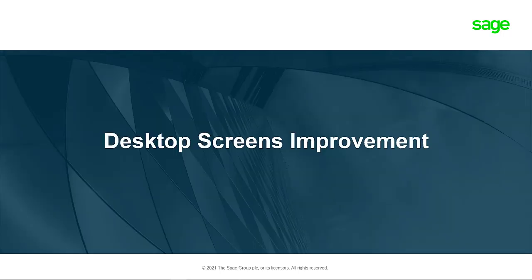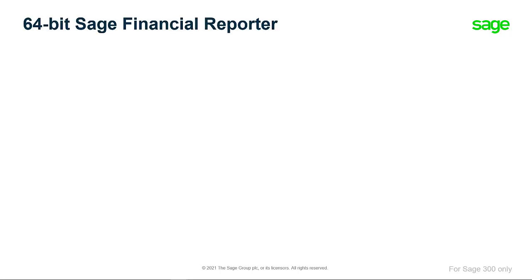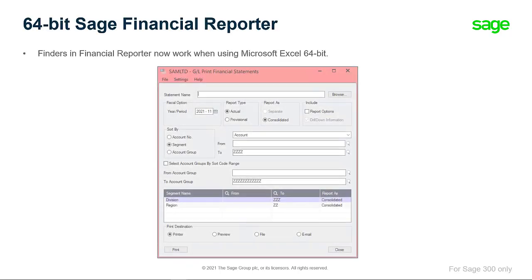Let's now review the desktop screens improvement. With this version, there is now Finder support for 64-bit Financial Reporter.